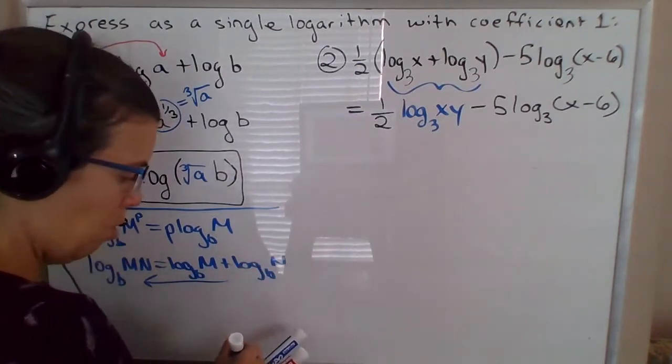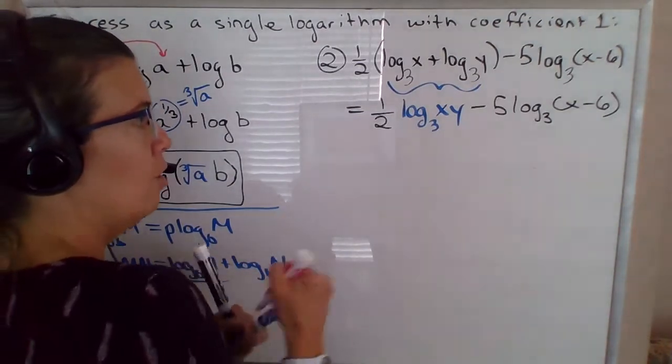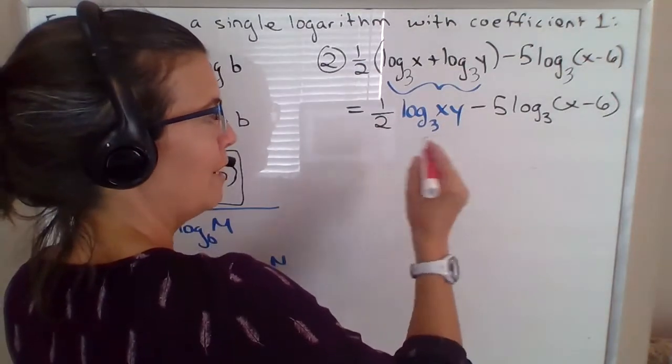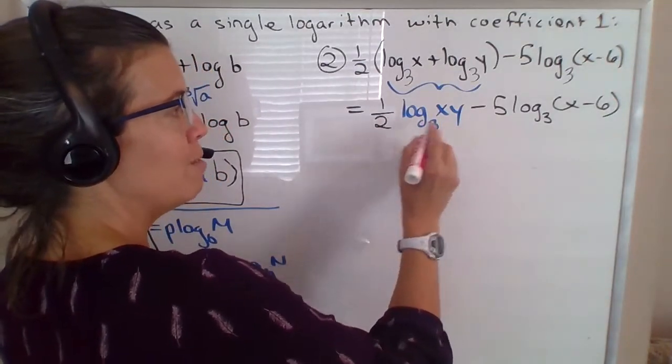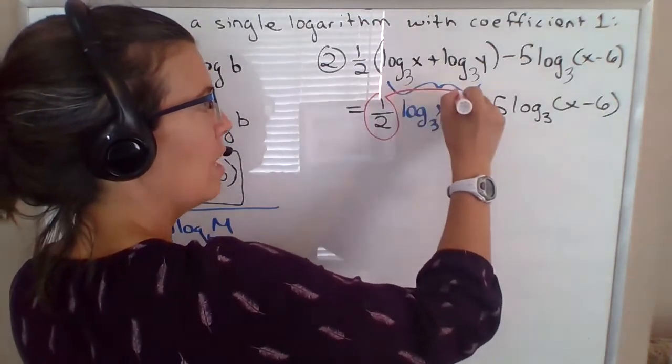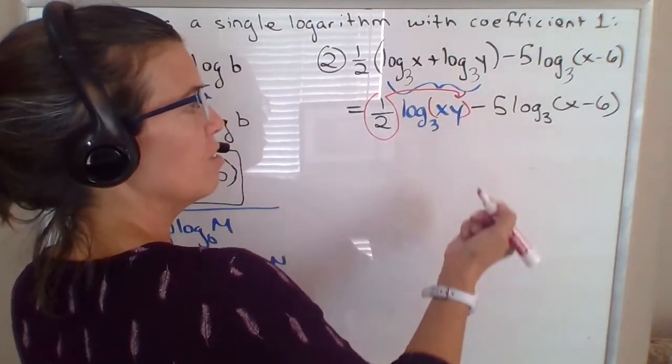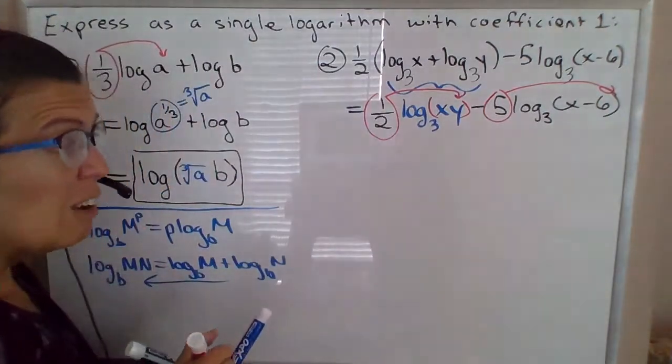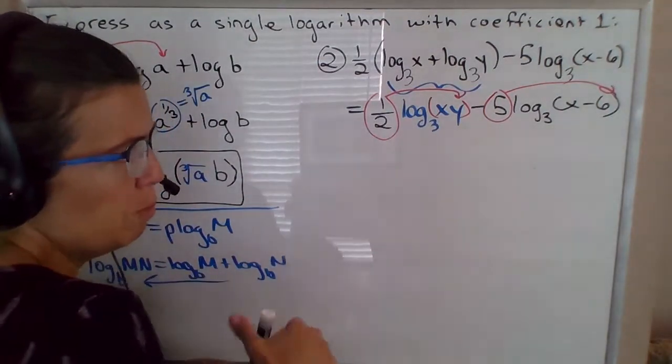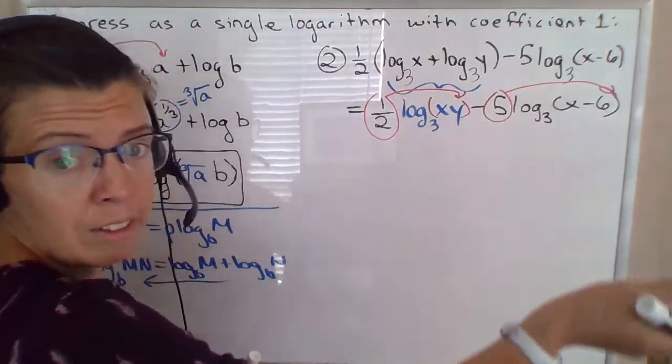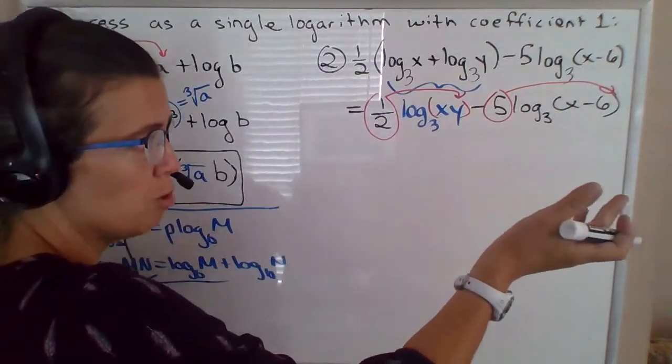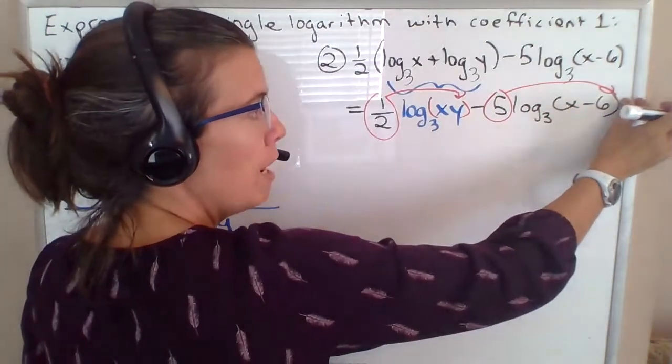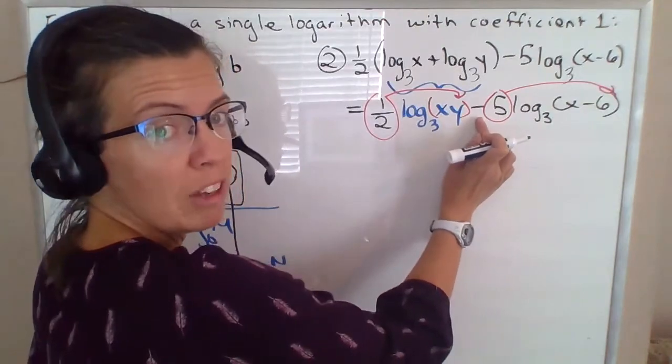So now I have one half times this single logarithm. So we can put that up in the exponent. Just make sure you put parentheses around this. And the five, you can put that up in the exponent. If you're wondering on that second part, well, why don't you put negative five up in the exponent? You can, if you want to. So that's kind of a personal choice at that point. If you put negative five up in the exponent, then this should become a plus. You can't leave the negative here and put it up in the exponent. It's got to be one or the other.